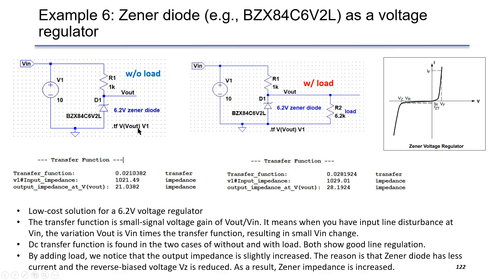By transfer function in both cases of without load and with load, the transfer function is a small value around 0.02. The transfer function is a small signal voltage gain of Vout over Vin. It means when you have an input line disturbance at Vin,